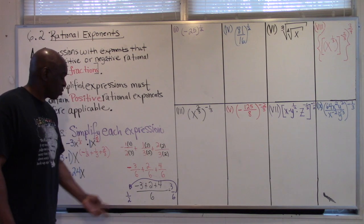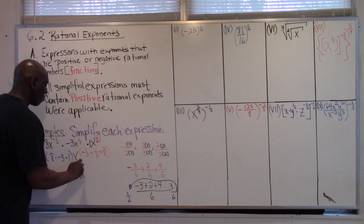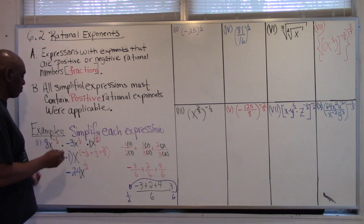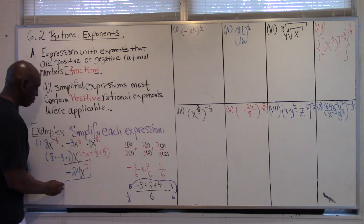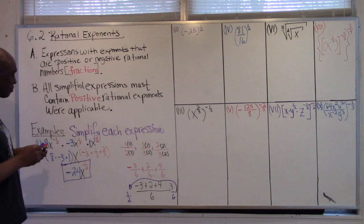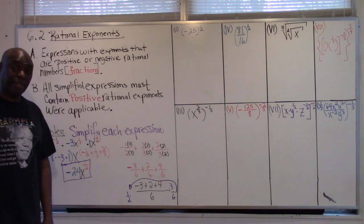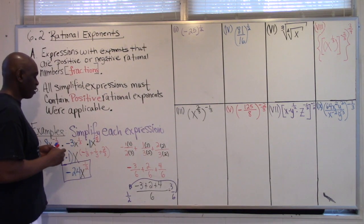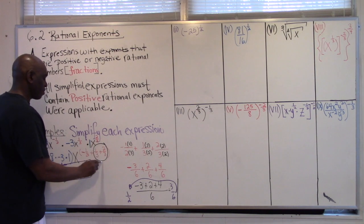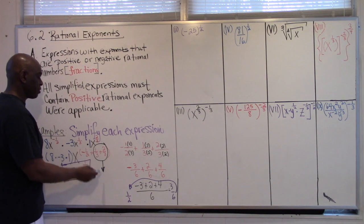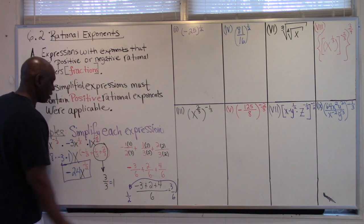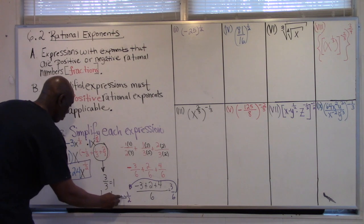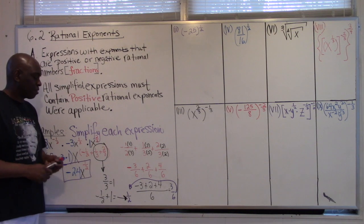So that gives us one-half — take one-half and put it right there as the exponent. Alternatively, you could have taken this portion first: one-third plus two-thirds equals 3 over 3, which equals 1. Then negative one-half plus 1 also equals one-half. Either way, you're fine. The final answer for example 1 is negative 24x to the one-half.